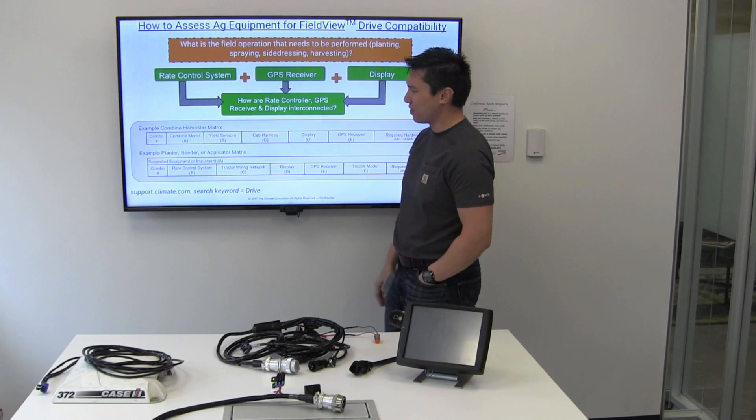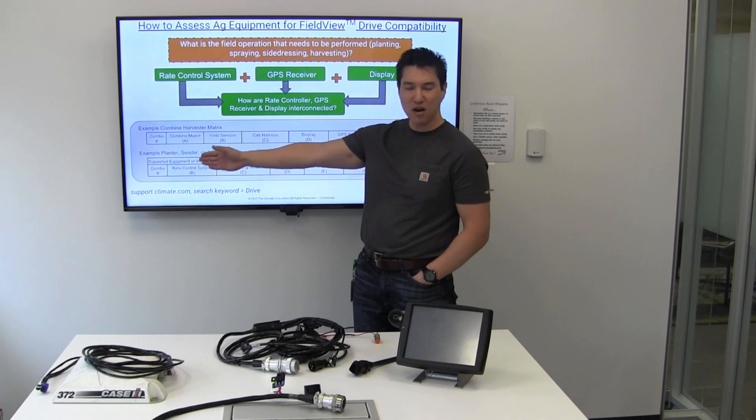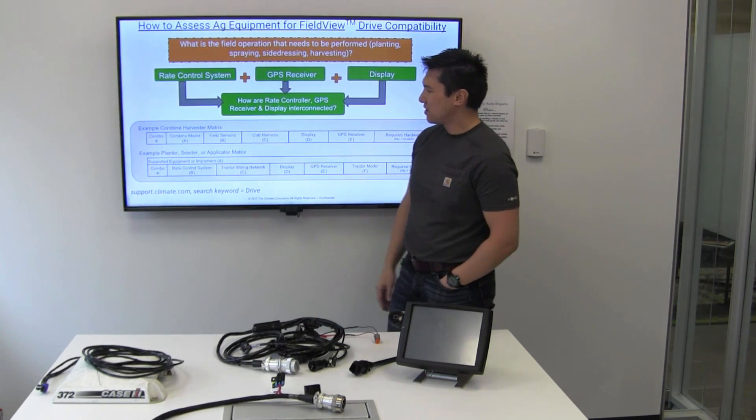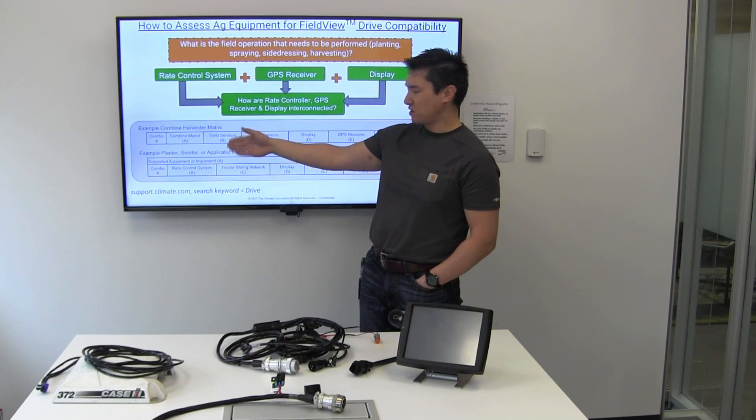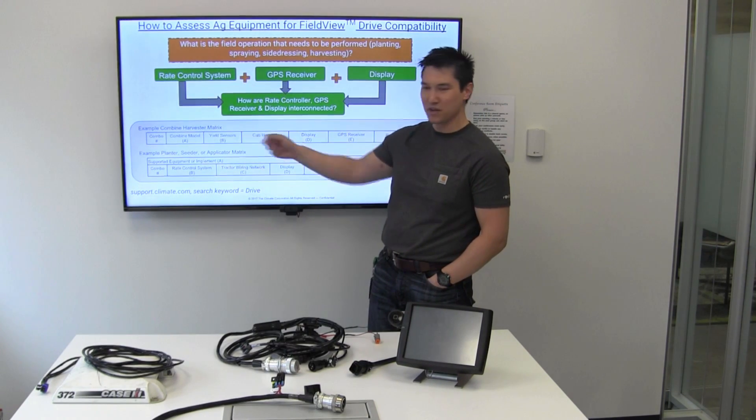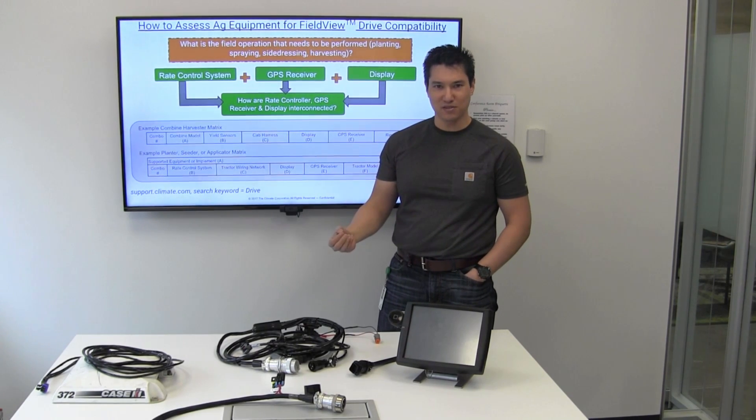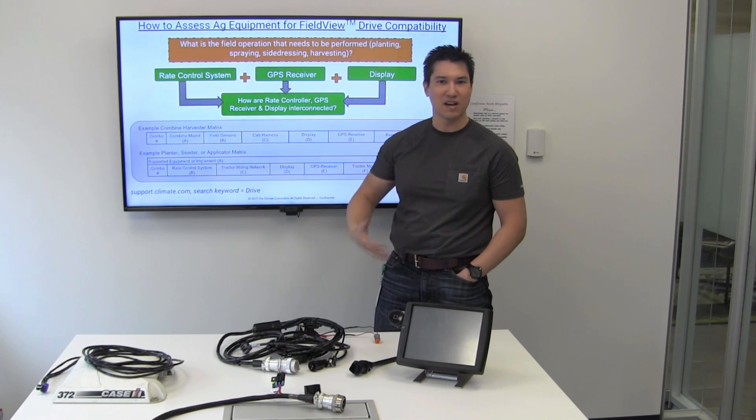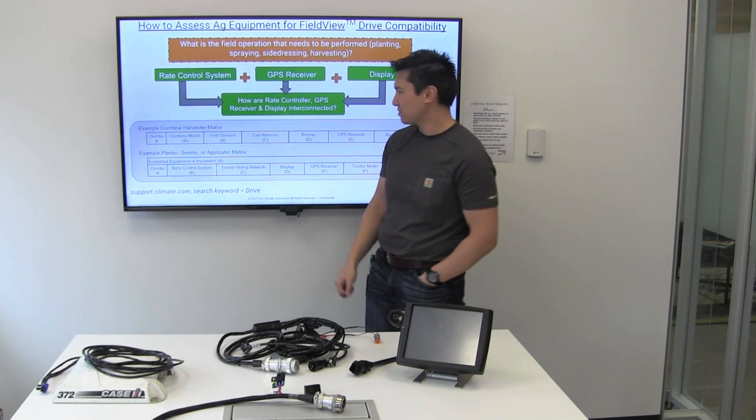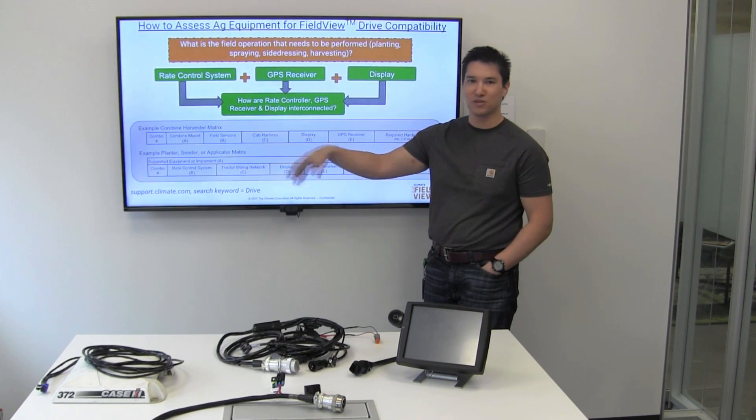If you're trying to assess your combine for yield drive compatibility, we have a select number of combine models that are deemed FieldView Drive supported. We'll also ask you about the yield sensors. For example, if you have a deer combine, it could be the original green star yield sensors. If it's a case combine, that would be the original AFS yield sensors. If it's a gloss, it would have the original quantimeter yield sensors. And then we also like to think about what type of cab harness it's got inside there.